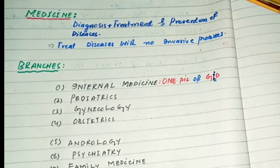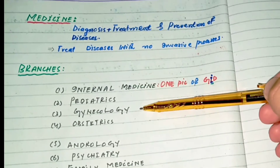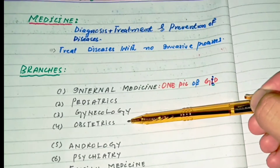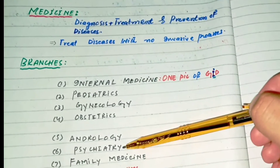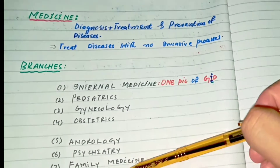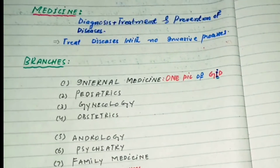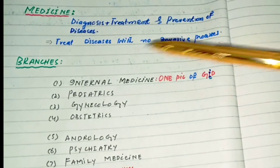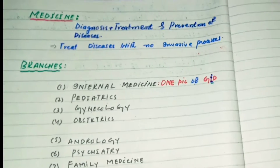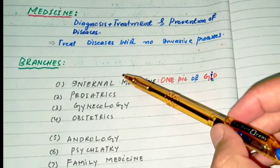The ten branches of medicine are: internal medicine, pediatrics, gynecology, obstetrics, andrology, psychiatry, family medicine, pathology, radiology, and community medicine. These are the main branches of medicine.